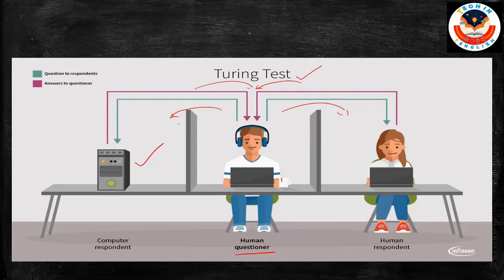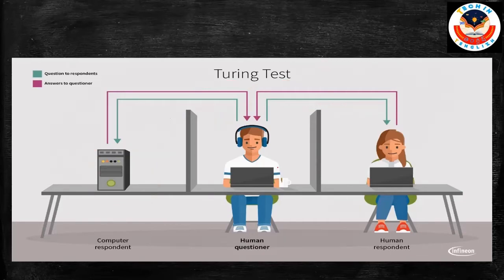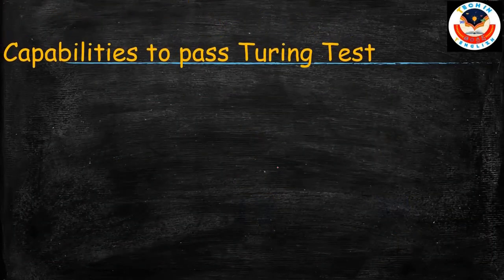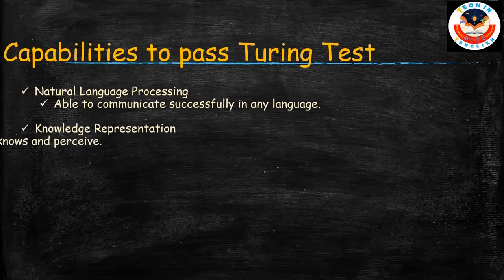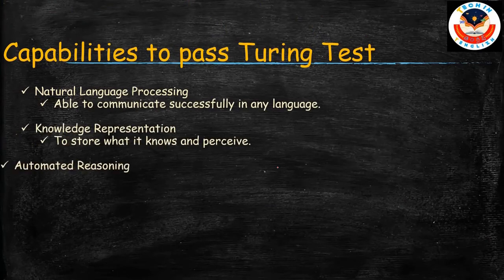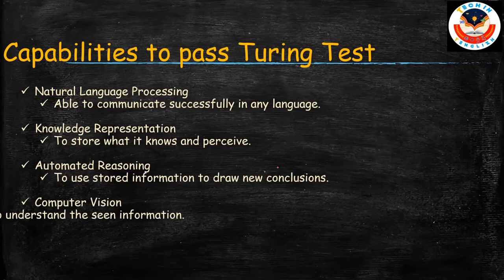Now, to pass this Turing Test, what capabilities should the machine have? This machine needs certain capabilities to pass the Turing Test. Here we will be looking at those things — these are the capabilities the machine should have to pass this Turing Test.